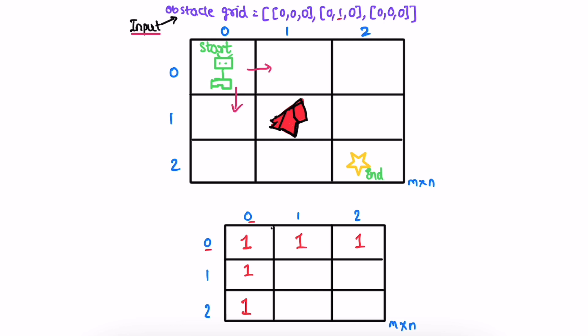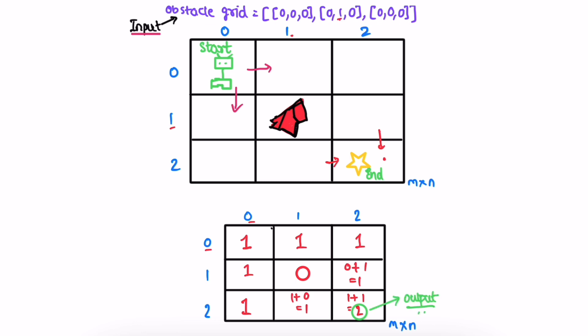Now we use the 0th row and 0th column to fill the rest of the DP array. We start iteration from the first row and first column. The rule is: if you find a 1 inside the obstacle array, fill that cell with 0. So there's an obstacle at [1][1], so we fill it with 0. For the next cell, you can reach it from the left and from above, so you add those values — 0 plus 1 equals 1. Continuing, 1 plus 0 is again 1. We reach the bottom right and our DP array is filled. The result is in the bottom right cell — in this case, 2 is the output.